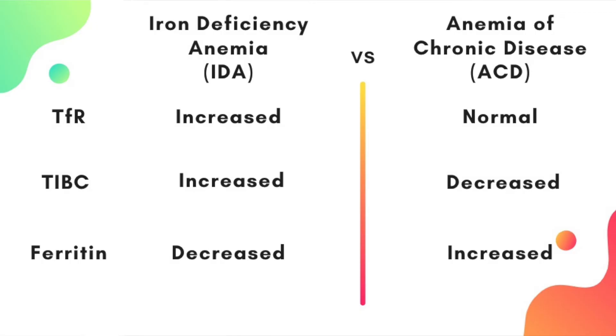Lastly, ferritin is decreased in IDA whereas in anemia of chronic disease it is increased. If you stain the bone marrow cells with Prussian blue, you will visually see that there's a lot of iron in the bone marrow.